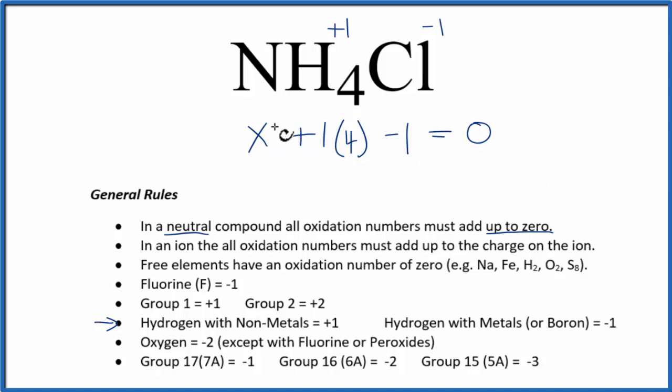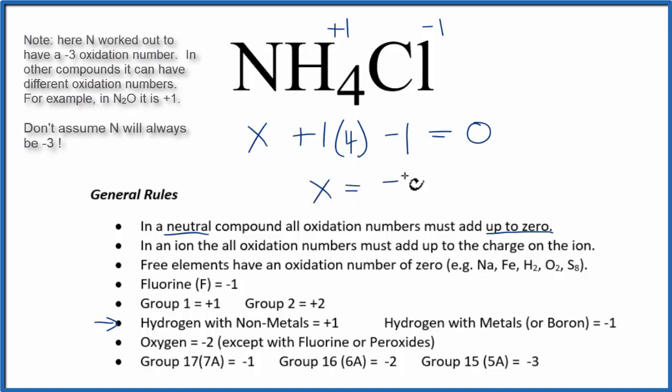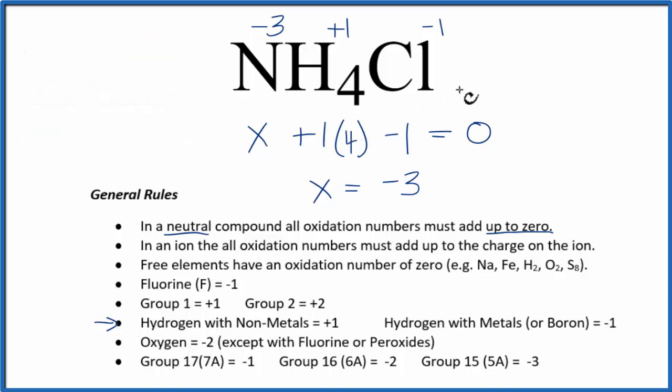So we end up with x plus 5 minus 1, so x here is going to equal a minus 3. So the oxidation number on the N in NH4Cl is minus 3. And these are the oxidation numbers for NH4Cl, ammonium chloride.